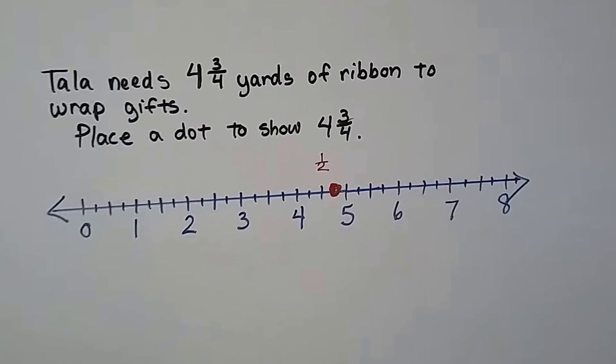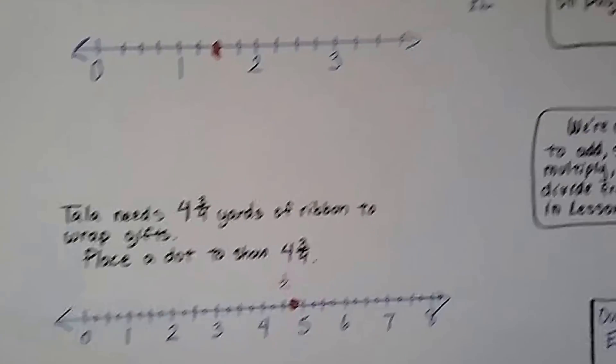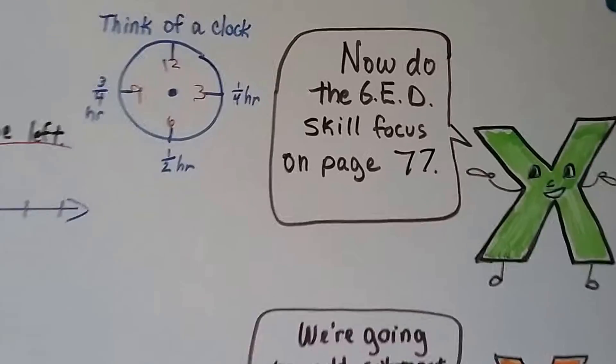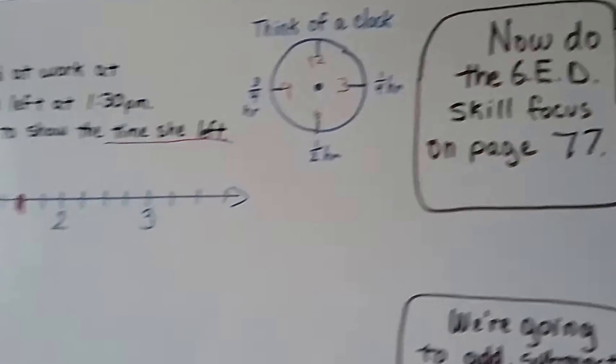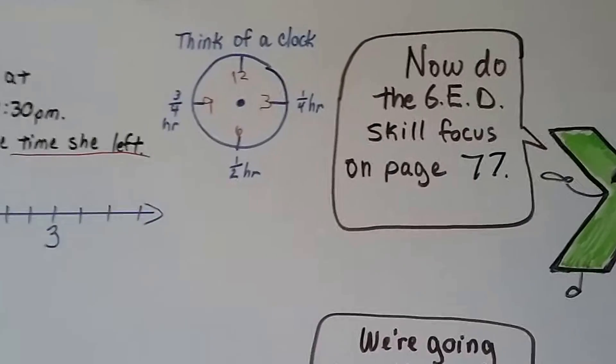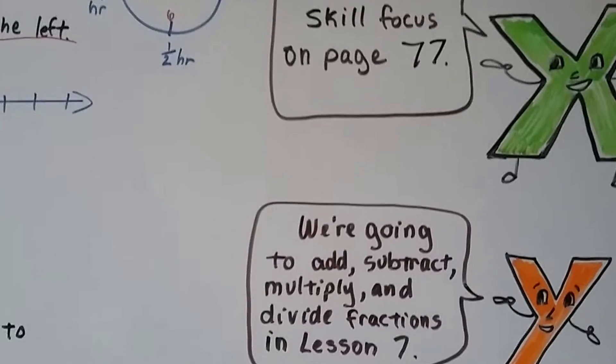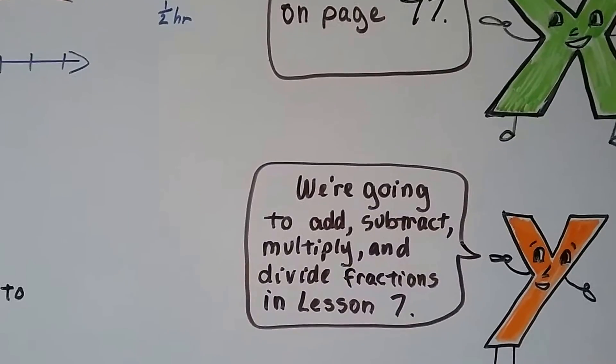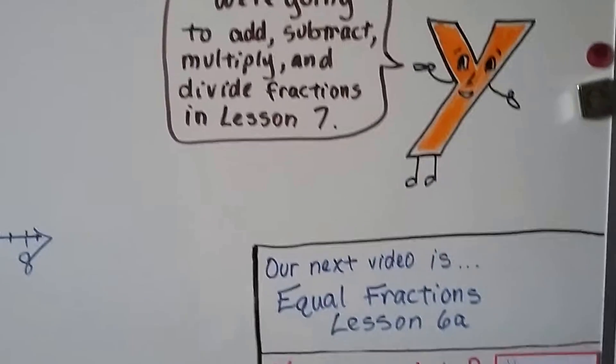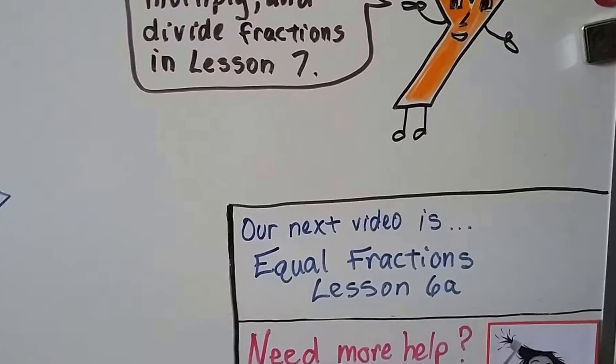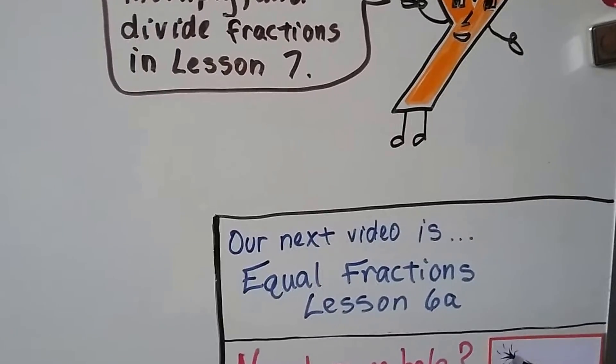So these can get a little tricky and you should be ready to do the skill focus on page 77 with all those number lines. I tried to give as many examples as I could that were similar to the problems in the book because we are going to be adding, subtracting, multiplying, and dividing these fractions in lesson seven. Our next video is going to be equal fractions, lesson 6a.